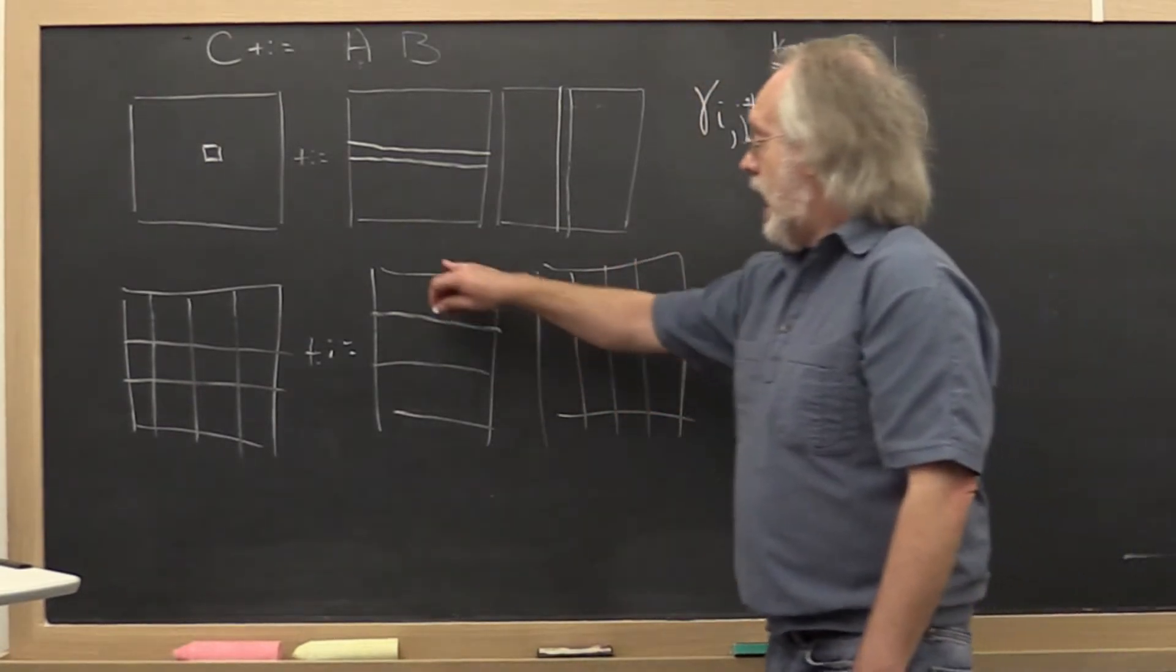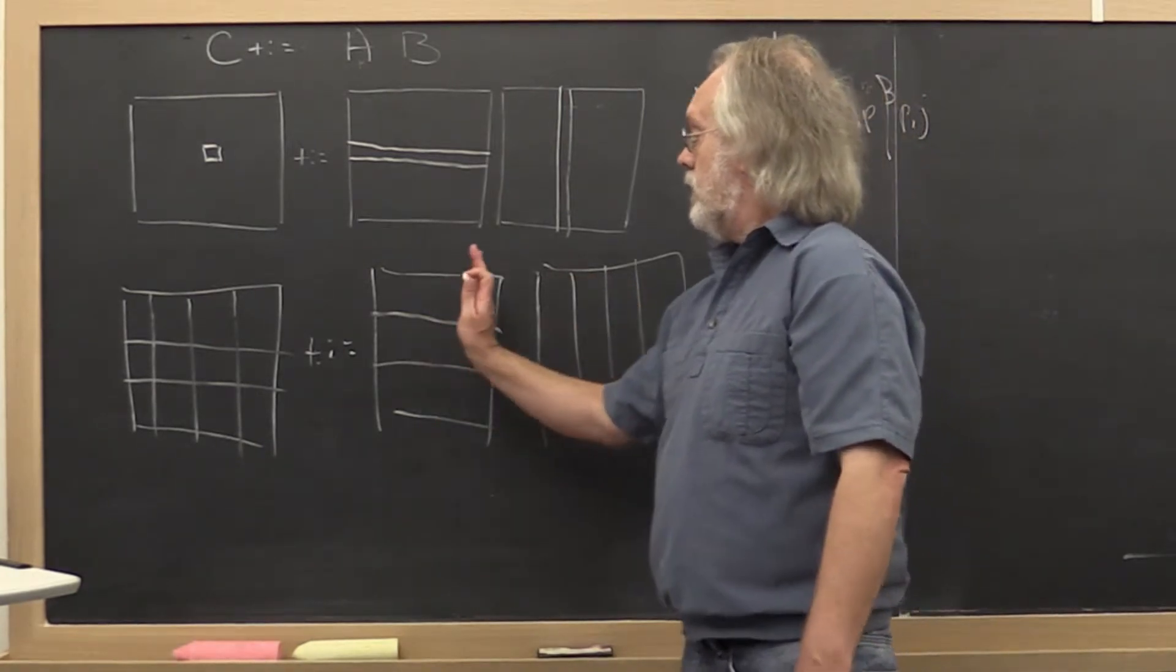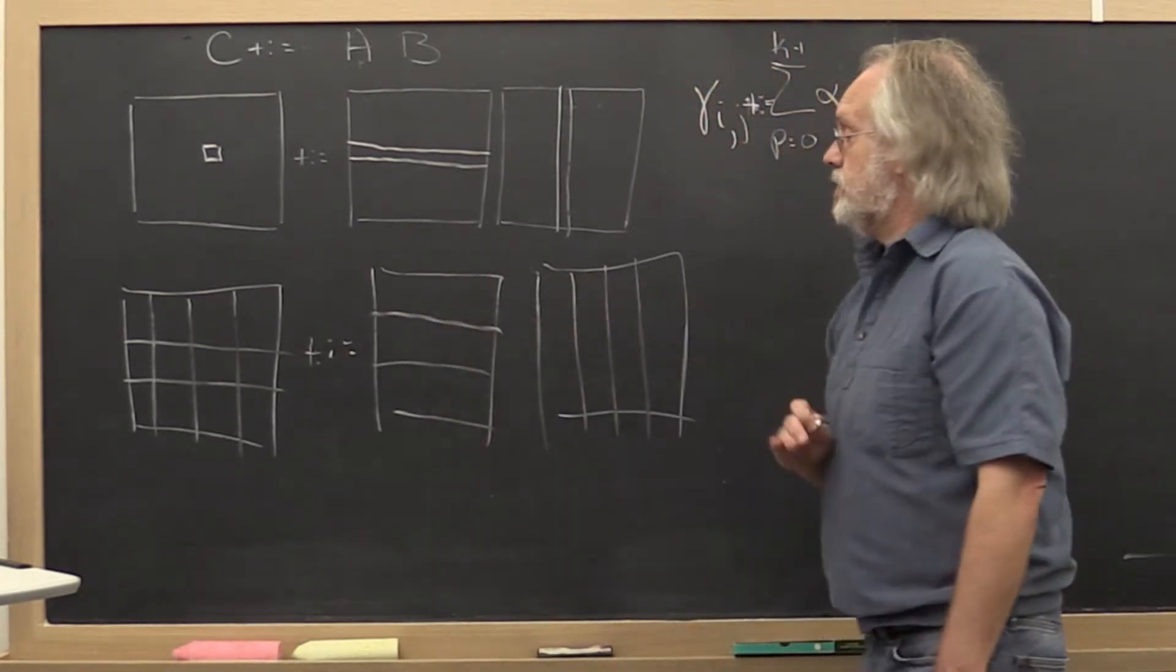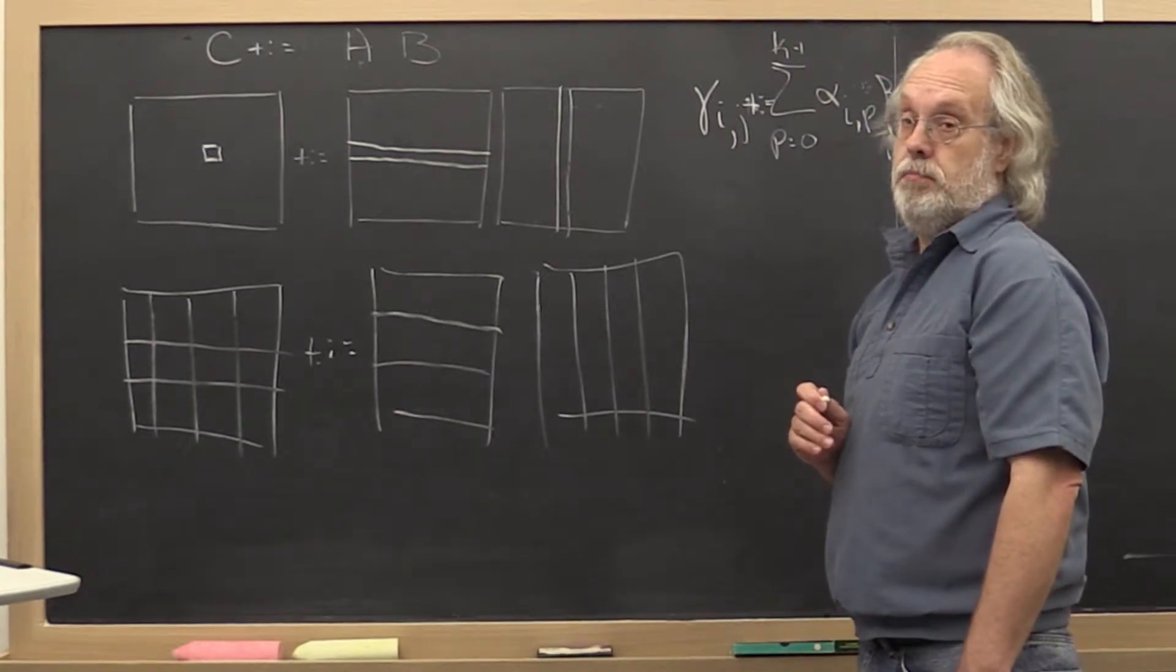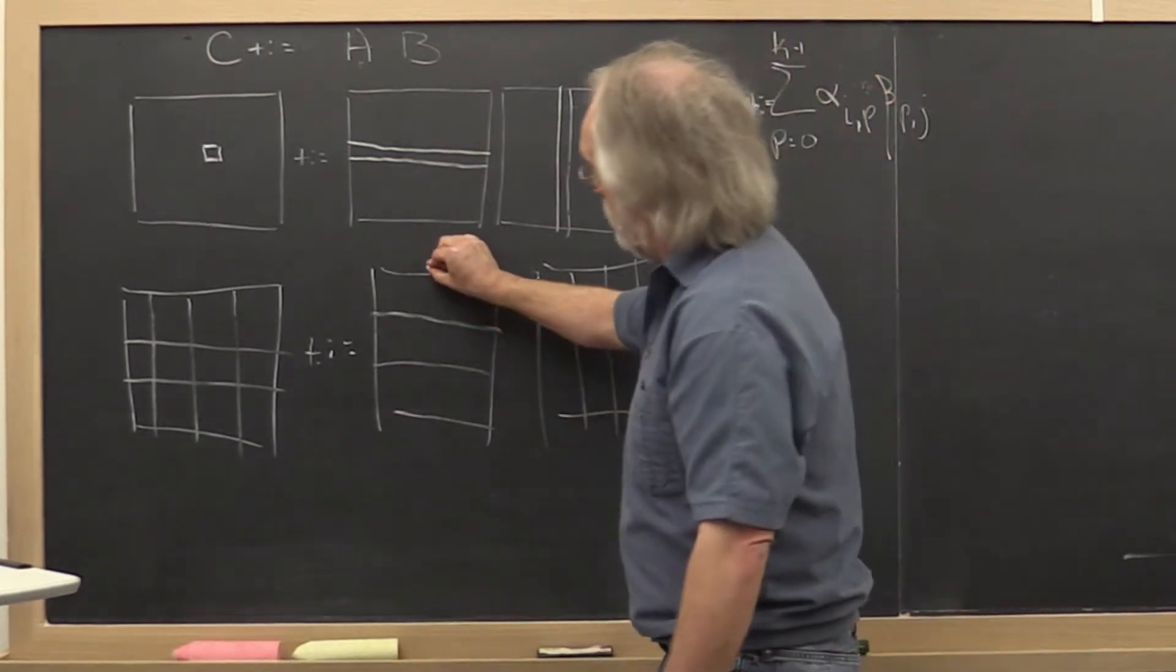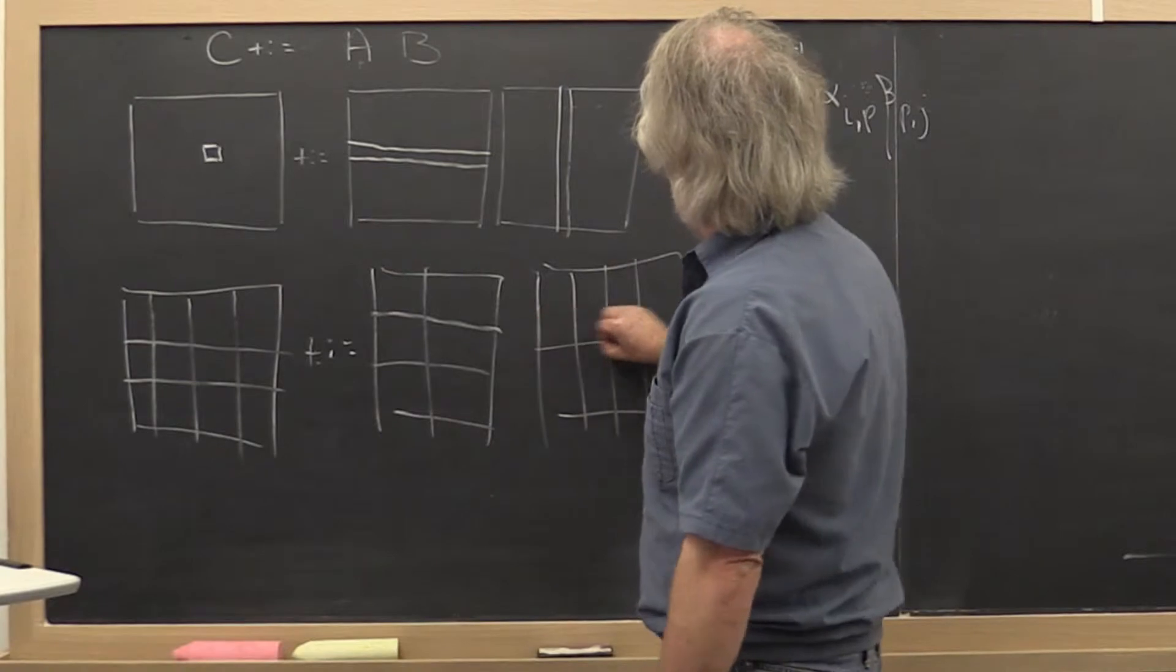And then however we partition our matrix A by columns, that's how we need to partition our matrix B by rows. So let's say we partition this into two here and two here.